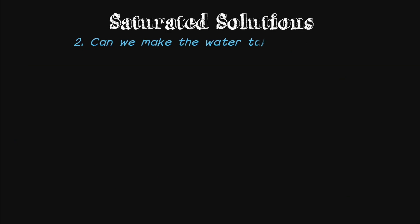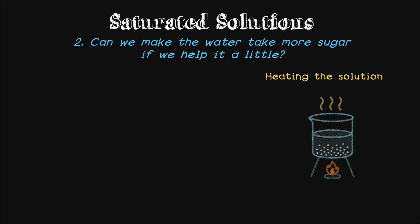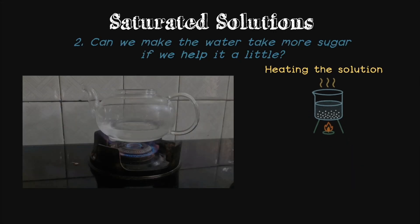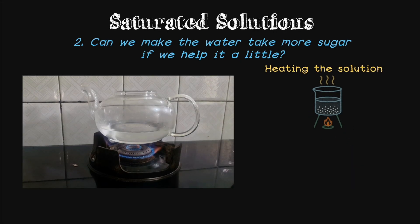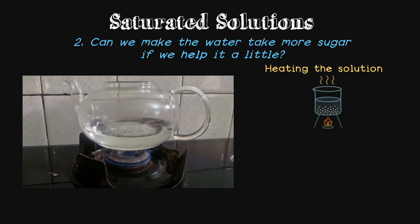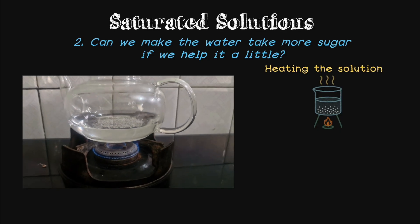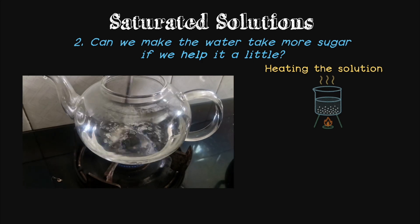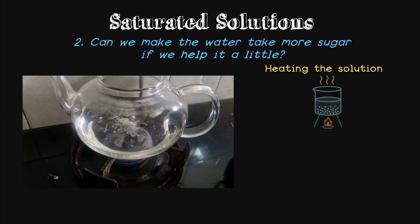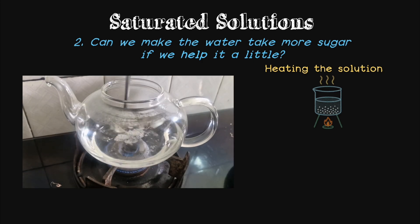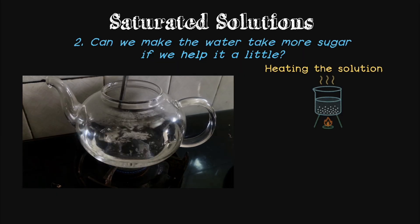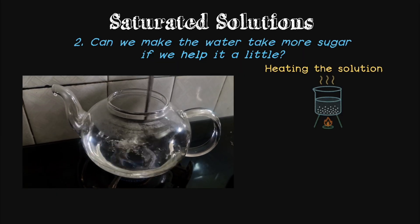Now let's think a bit deeper. Can we make the water take more sugar if we help it a little? Let's heat the solution that we prepared of sugar and see what happens. As you can see through this very pretty looking glass kettle here, the same saturated solution of sugar with some undissolved sugar is heated. And in a short while, when you try to stir the mixture after heating it, you will see that sugar molecules are disappearing again.